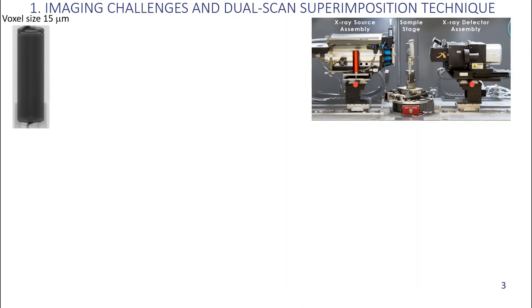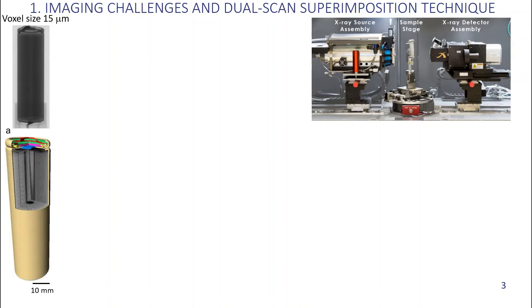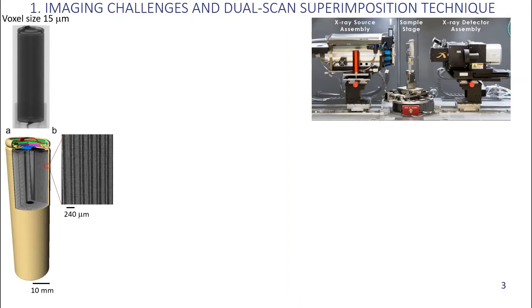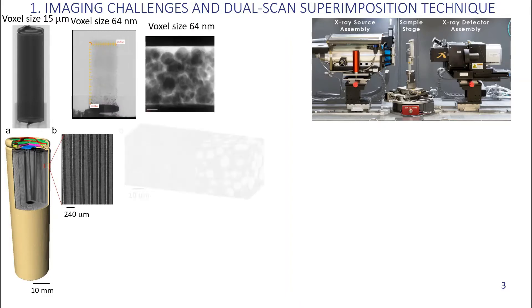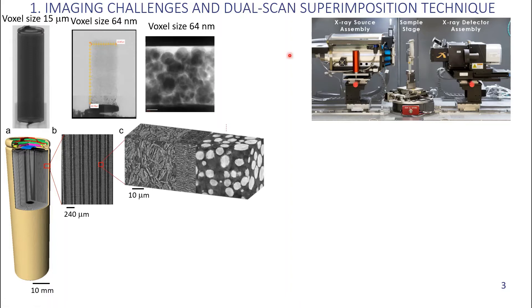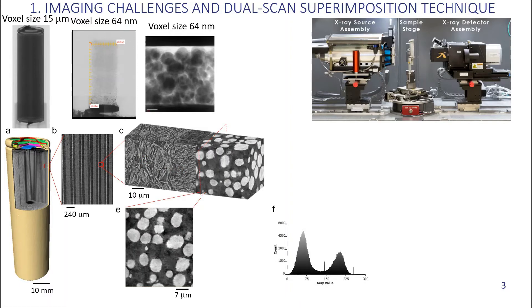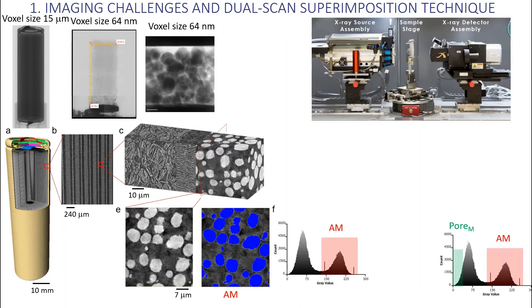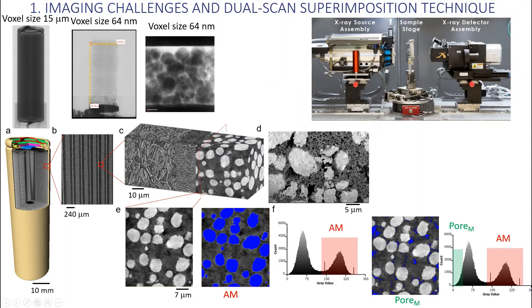Using a resolution of 15 microns, we can get the macroscopic structure information of the cylindrical cell and visualize the layered electrodes. As the resolution increases to 64 nanometers, the spatial arrangement of the cathodes, the separator, and anode can be seen. Judging by the grayscale difference, we can easily segment out the NMC particles and the macropores. However, we are not able to distinguish between the carbon binder and the nanopores due to the low resolution and contrast, when this low X-ray attenuating carbon binder phase is scanned with the high X-ray attenuating NMC particles.